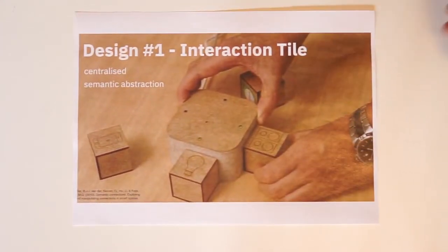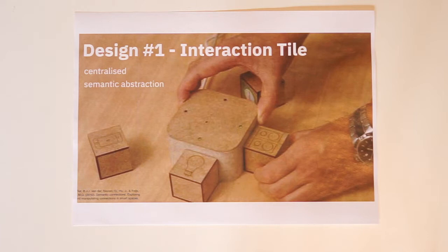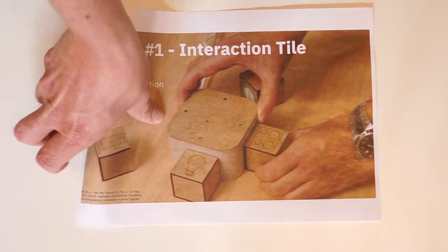The first design is called Interaction Tile. Interaction Tile is a centralized design. Connections between various devices are made by interacting with a central device, irrespective of the locations of the devices that are to be connected in the living room. The network connections are abstracted and taken out of context. The design mainly relies on cognitive skills — representations and symbolic meaning of icons and colors.